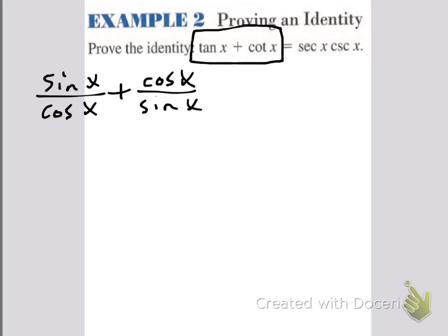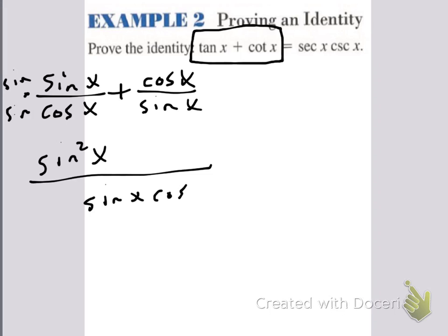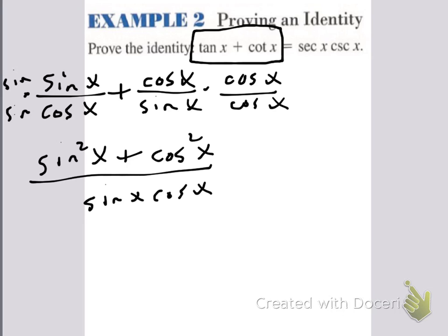There's nothing to factor on top, so we're going to have to make them common denominators. To do that, we multiply top and bottom here by sine, giving sine squared x. My common denominator is going to be sine x cosine x — just multiply them together. Then we multiply the other fraction by cosine x, so I get plus cosine squared x. But we know that sine squared plus cosine squared is 1, so I have 1 over sine x cosine x.